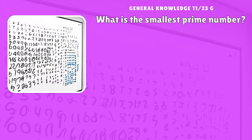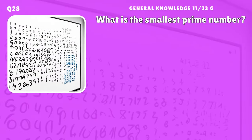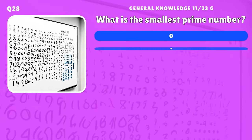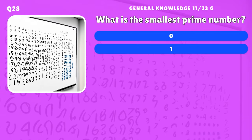What is the smallest prime number? A) 0, B) 1, C) 2, D) 3.